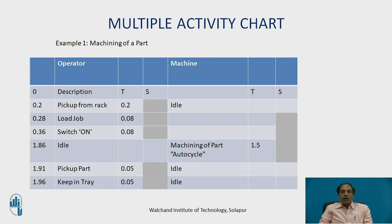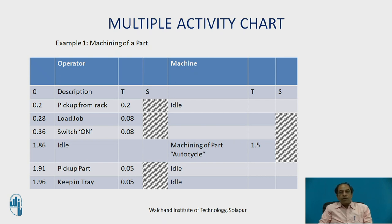Here is an example of a multiple activity chart for one operator and one machine. The columns are: time scale, operator, time required for that operator activity, machine activity, time required for that machine activity, and remarks. Starting at 0.2 minutes on the time scale, the operator picks up the job from the rack, taking 0.2 minutes. During this time, the machine is idle. All time scales are shown in minutes, and the watch runs continuously on a cumulative basis.